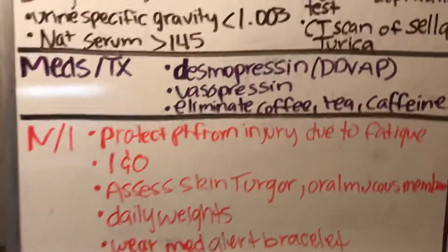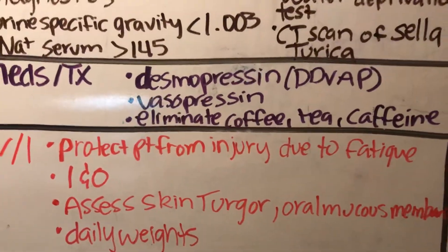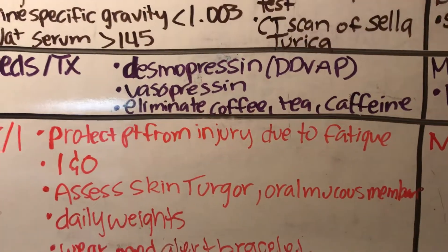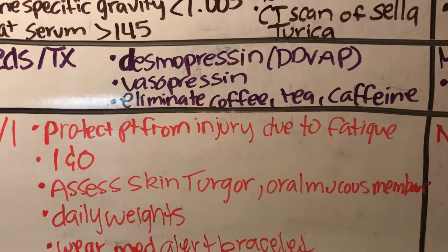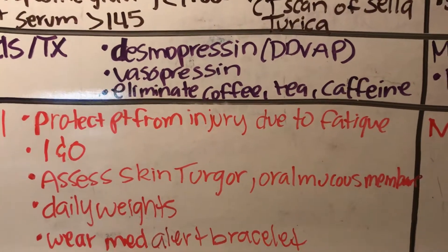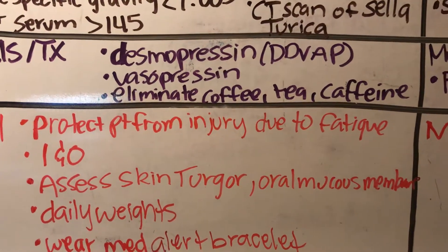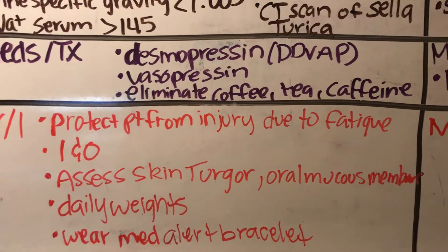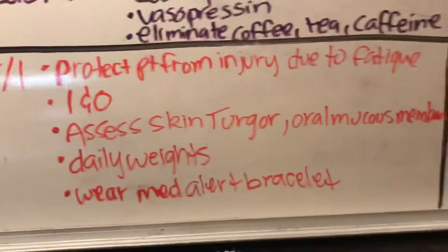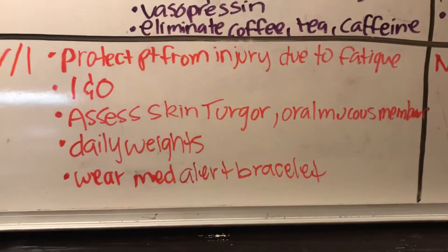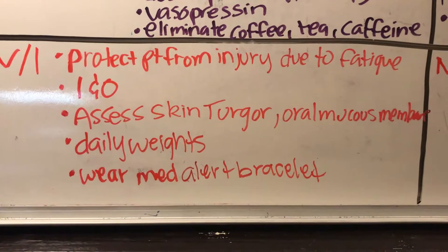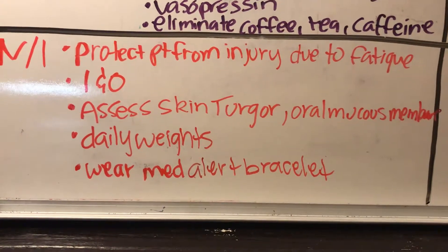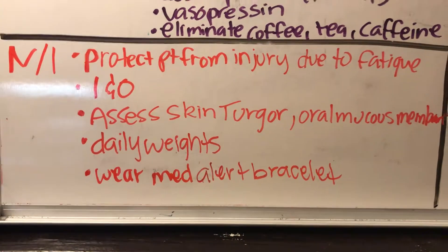For medications and treatment you can use desmopressin, DDAVP, or vasopressin. You want to eliminate coffee, tea, caffeine, or anything that's going to increase diuresis. For nursing interventions, you want to protect the patient from injury due to fatigue — since they're always going to the bathroom, you want to monitor them.